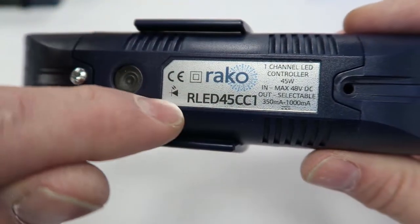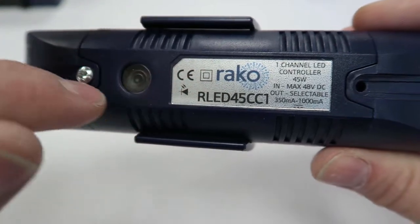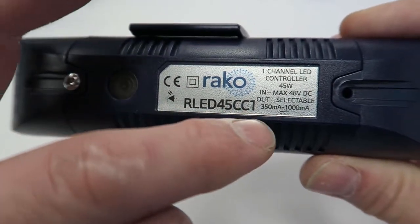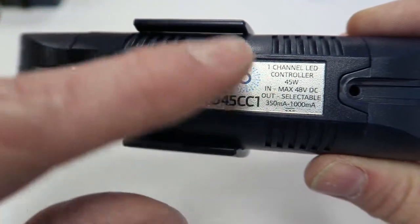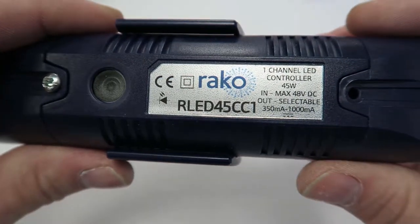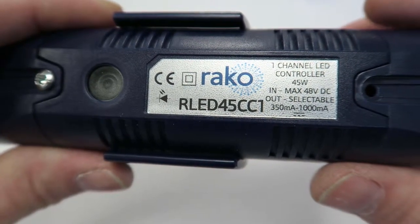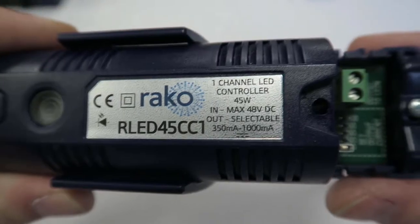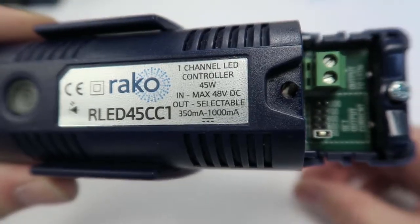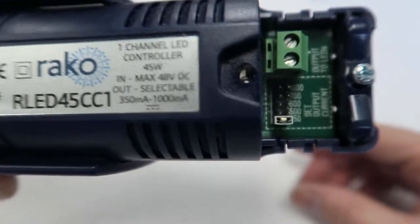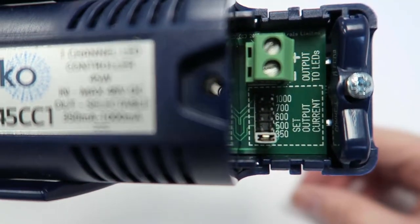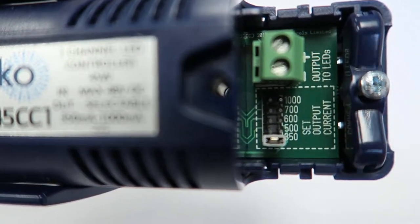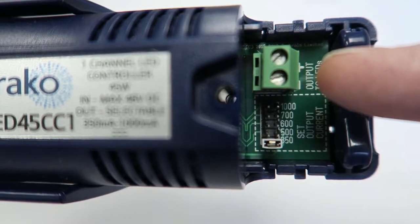One thing to note is, it's 48 volt DC input, so it's not mains in, so you need a power supply to go with this as well. But as you can see on the front there, it's selectable between 350mA and 1000mA. Most LED lights now seem to be 350mA, but it gives you the range all the way up to 1000mA. So you can literally directly connect an LED light to a string of LED lights in series.